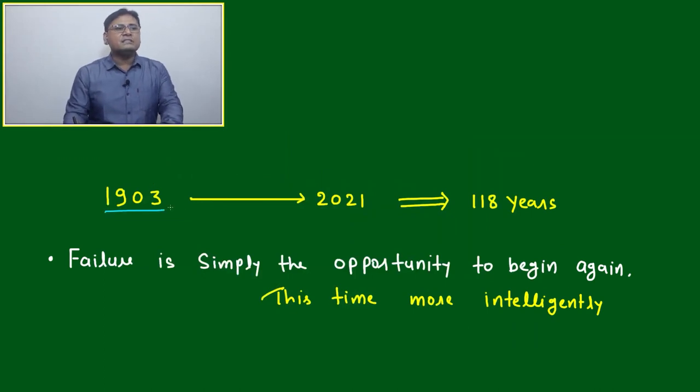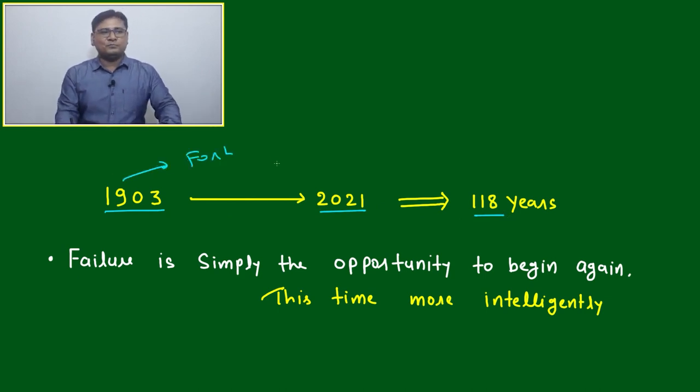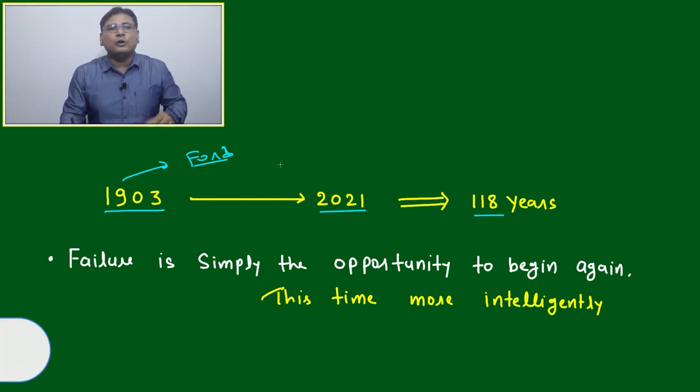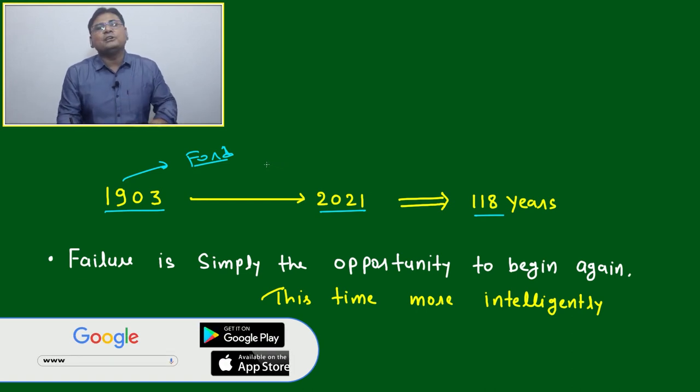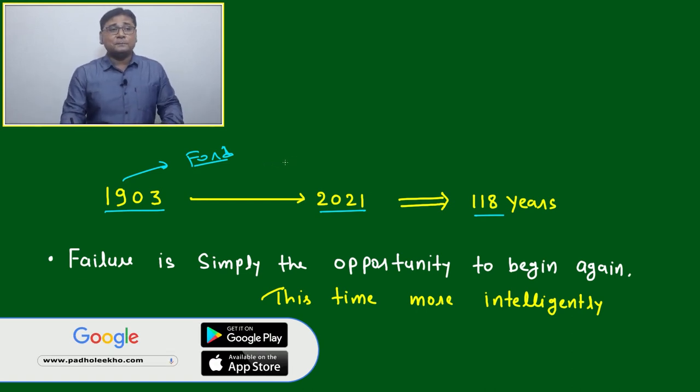This is 1903, and now it is 2021. 118 years before, Henry Ford started the company Ford. At that point in time, it was technically challenging—you can't imagine. And another point: Henry Ford was not studied properly in school; he was not properly passed out of middle school. How much difficult.